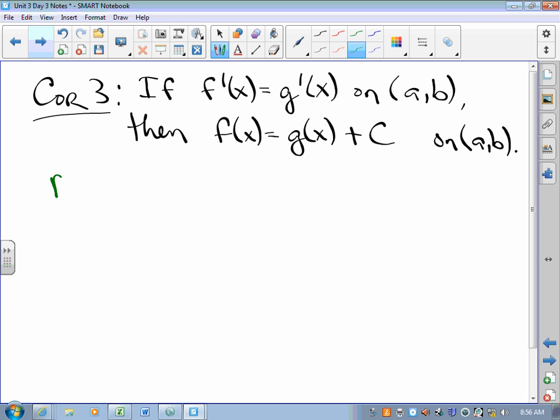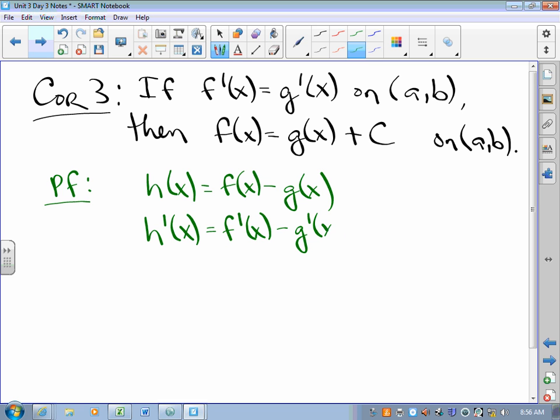So how do we sketch that? Well, we let H of X equal F of X minus G of X. And since F and G prime both exist, F prime and G prime both exist, then H is a continuous differentiable function, mean value theorem applies. H prime of X is F prime of X minus G prime of X. And we're told that F prime is G prime, so H prime is zero.